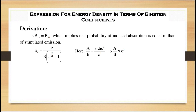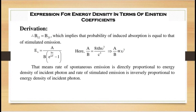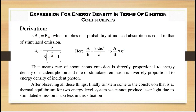Here A/B = 8πhν³/c³, which implies A/B is directly proportional to ν³. This means the rate of spontaneous emission is directly proportional to ν³, while the rate of stimulated emission is inversely proportional to ν³. Einstein therefore concluded that at thermal equilibrium for a two-energy-level system, we cannot produce laser light because stimulated emission is too small in this situation.